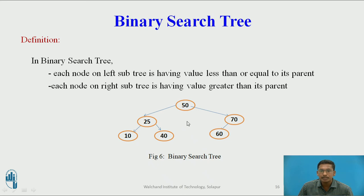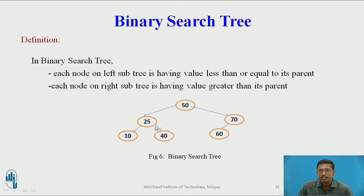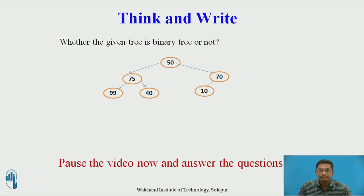This property is applicable for all nodes. For example, node 25: 10 is on its left side so 10 is less than 25, and 40 is greater than 25 so it is on the right side. Similarly, for node 70: 60 is less than 70, so 60 is on the left side of 70. Now pause the video and answer whether the given tree is a binary tree or not.